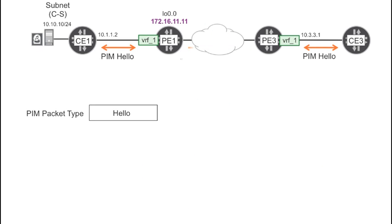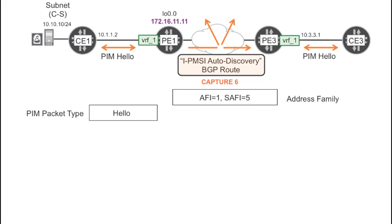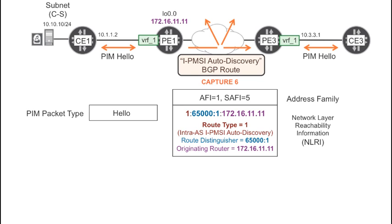Let's have a closer look at this Multicast Autodiscovery route. There is a new address family called INET-MVPN, or AFI-1 SAFI-5. Within this address family, there are different route types. In this case, the route type is 1,